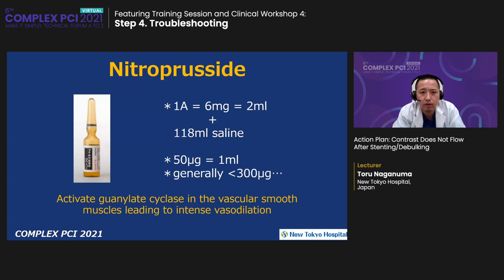Let me introduce our regimen for nitroprusside. We add 1 ampoule nitroprusside into 118 mL saline, total 120 mL — meaning 1 mL includes 50 mcg nitroprusside. Generally, less than 300 mcg nitroprusside is acceptable, but actually we use more than 500, 600, even 1,000 mcg. This drug activates guanylate cyclase in the vascular smooth muscle cells, leading to intense vasodilation.